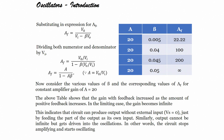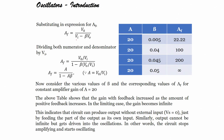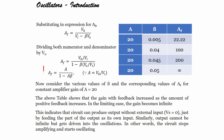The feedback signal Vt depends on feedback factor β: Vt = β·Vo, since part of Vo is applied to β. Substituting into Vi = Vs + Vt gives Vi = Vs + β·Vo, or Vs = Vi − β·Vo. Substituting into Af = Vo/Vs gives Af = Vo/(Vi − β·Vo). Dividing numerator and denominator by Vi: Af = A/(1 − Aβ), where A = Vo/Vi is the open-loop gain.